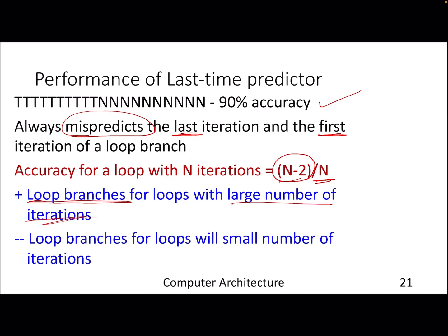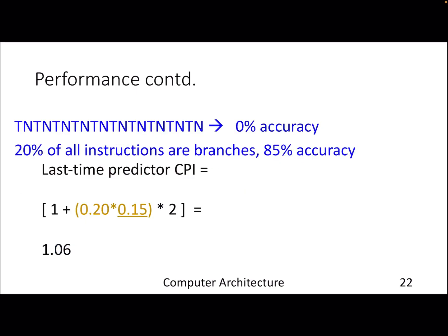If a loop has millions or thousands of iterations, this predictor is very good — accuracy approaches 99.99%. But if a loop iterates only twice, accuracy is zero, because mistakes are made on the very first and the very last iteration, and there are only two iterations total. Similarly, if a branch ping-pongs between taken and not taken, accuracy will be zero percent.